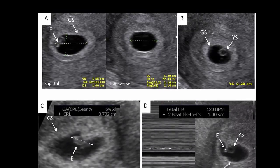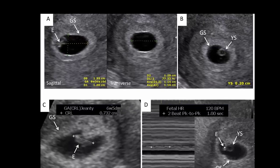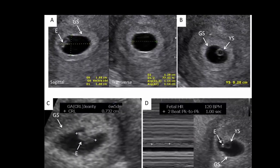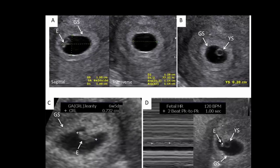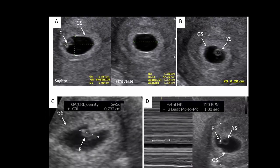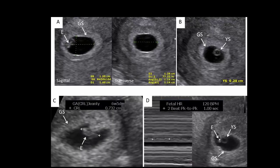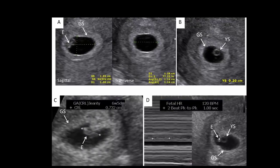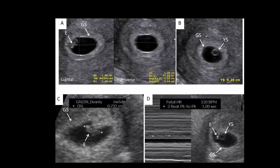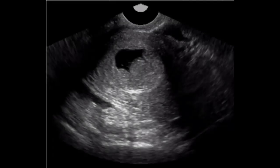The gestational sac is normally contained within the uterus. It provides an embryo with nourishment and helps circulate gases between the mother and the embryo. The yolk sac also produces cells that turn into important structures, such as the umbilical cord, blood cells, and reproductive organs.